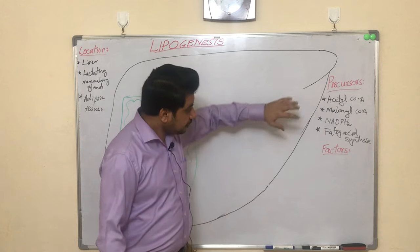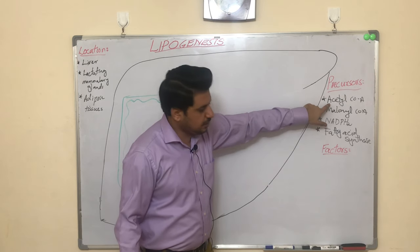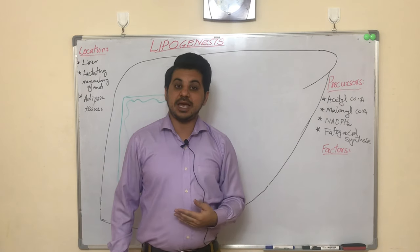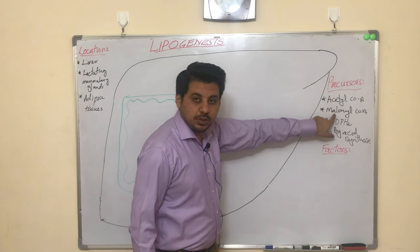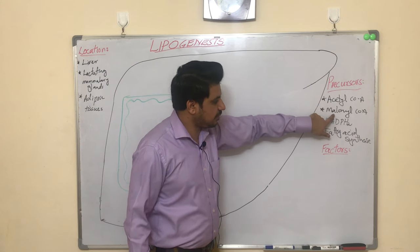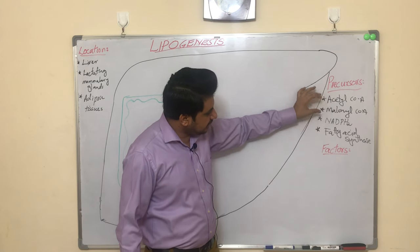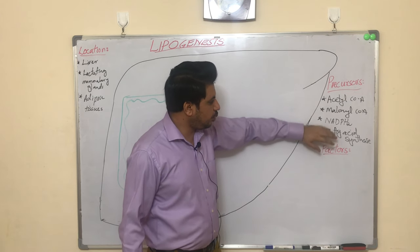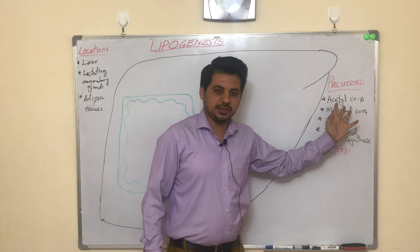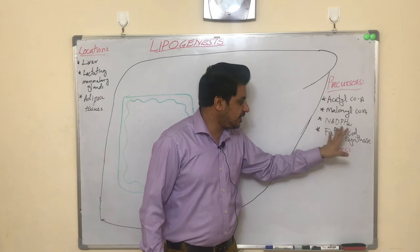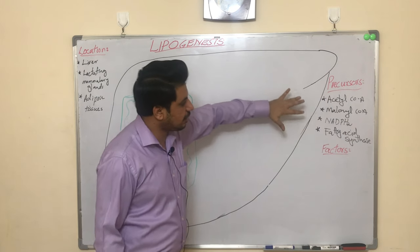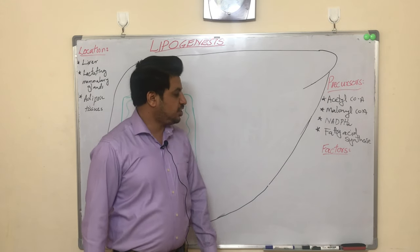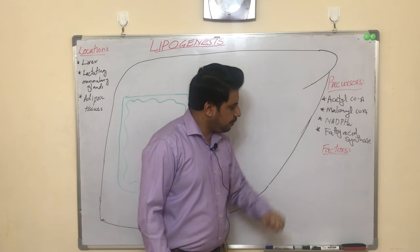This acetyl-CoA is usually obtained after the glycolytic aerobic pathway. But we also need to get malonyl-CoA and NADPH2. Once we have these two substances, fatty acid synthase will incorporate the carbons of these molecules into the growing fatty acid chains.